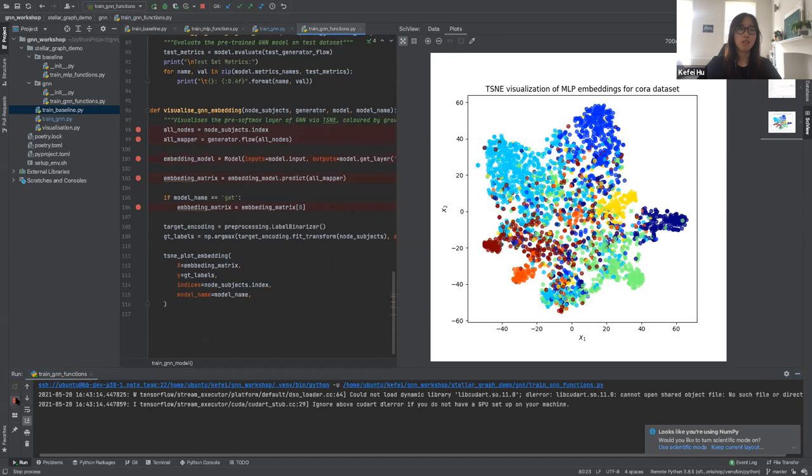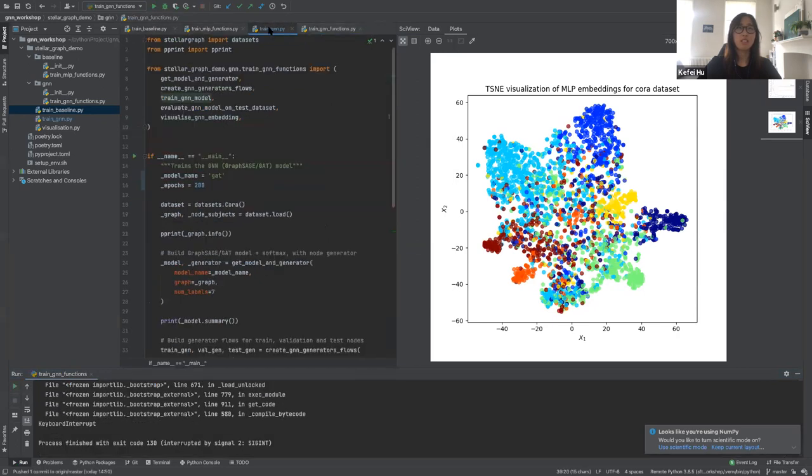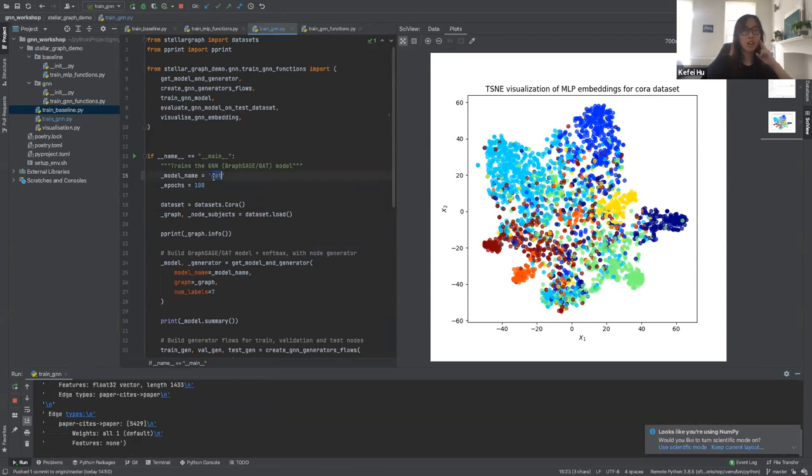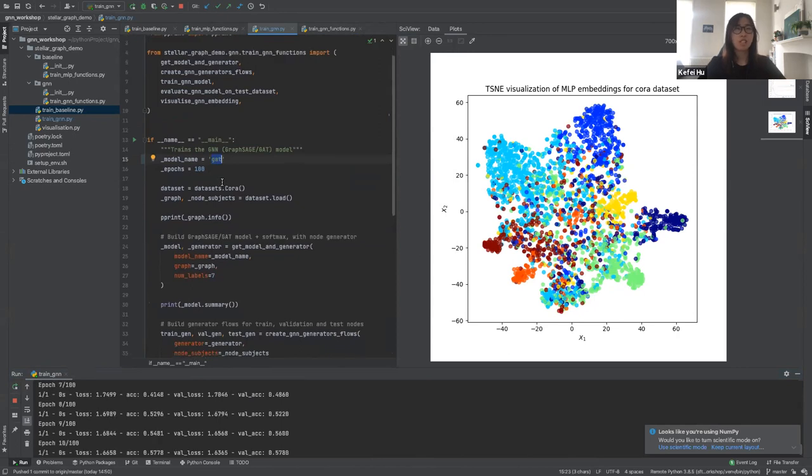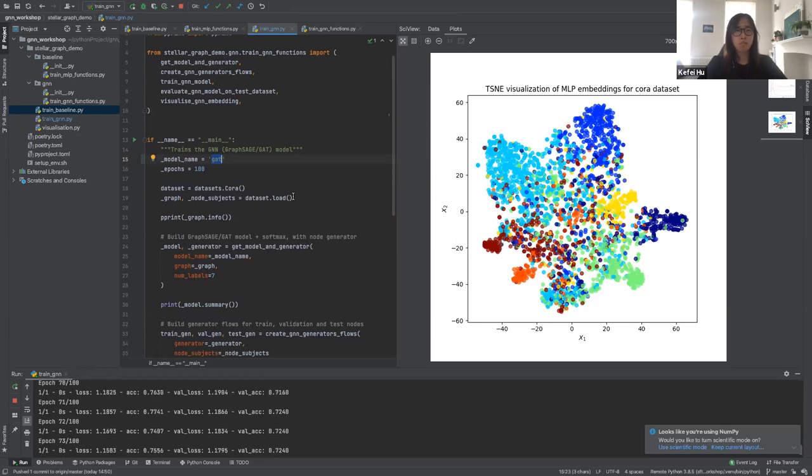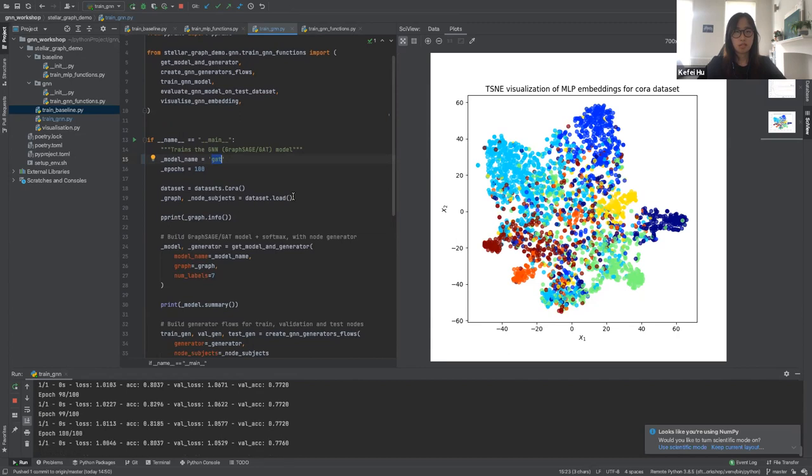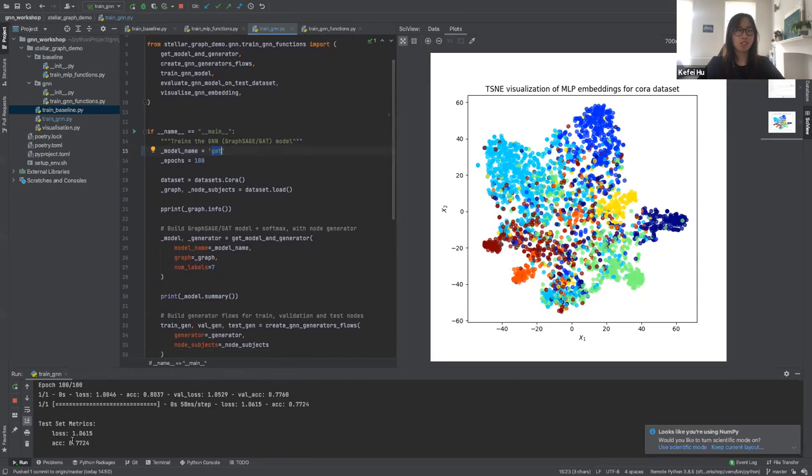Right now I am training the Graph Attention Networks for the same number of epochs as the baseline model.